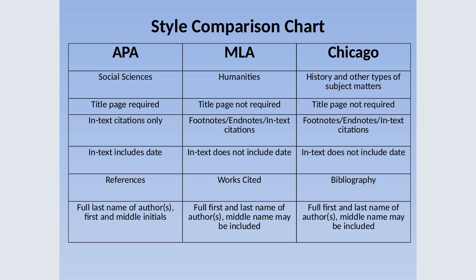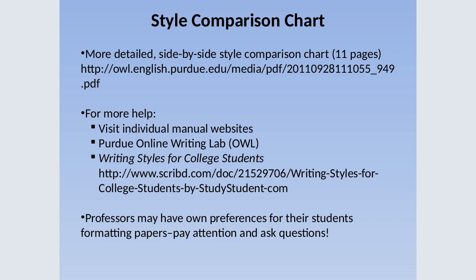Here are your three main styles. With APA, what is important is the timeliness of your research, so you want your in-text citation to include the date. In-text citations in MLA will not include the date, and same with Chicago. If you'd like to see a more detailed comparison chart of those styles, you can visit the website listed there. The best place to go for help is the actual individual manual or Purdue OWL, which is a wonderful resource, as well as writing styles for college students.